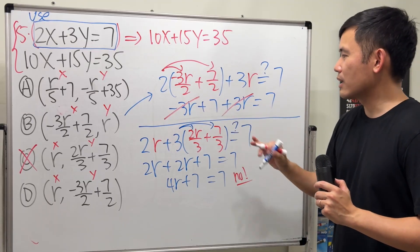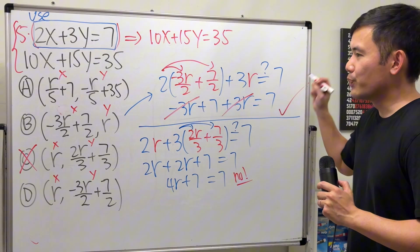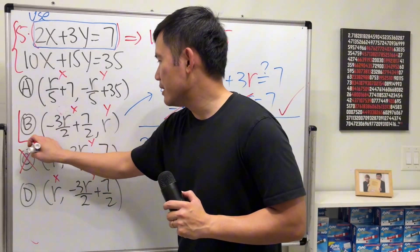This and that cancel completely. 7 is equal to 7, so it works. Answer is b.